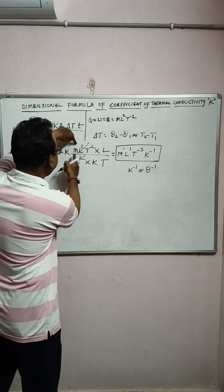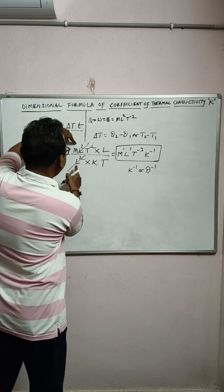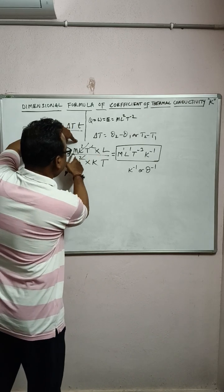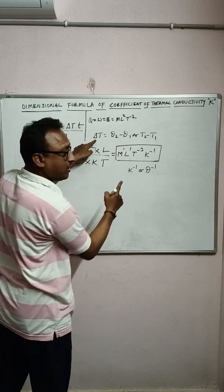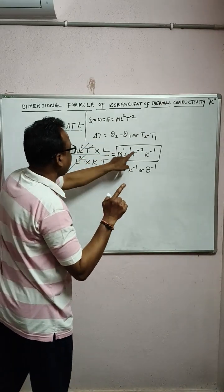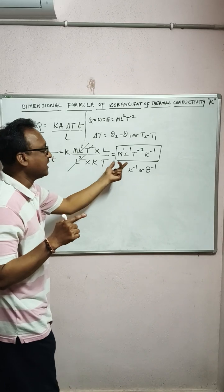So if you substitute all these dimensions here, you can see M, L² L² gets cancelled, one L is left over. Therefore M¹, L¹, T goes to the top, -1 and -2 makes T⁻³, and Kelvin is left over, K⁻¹.